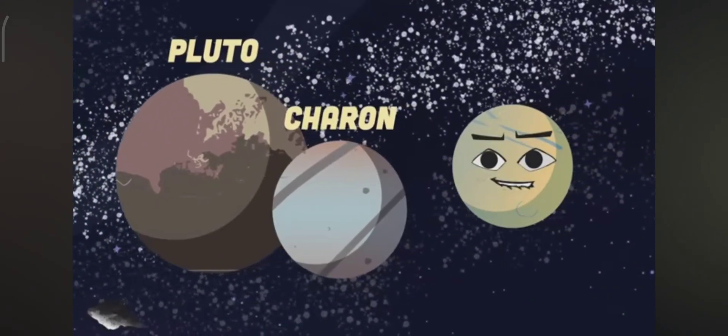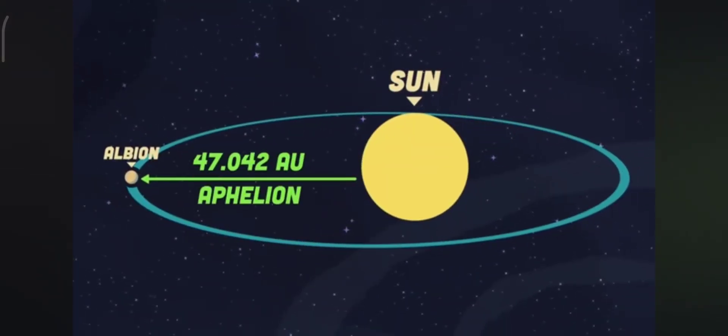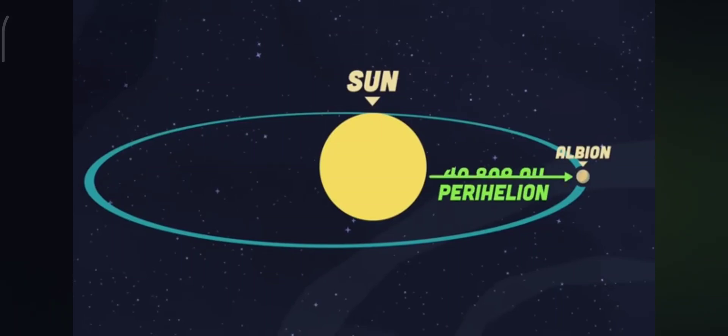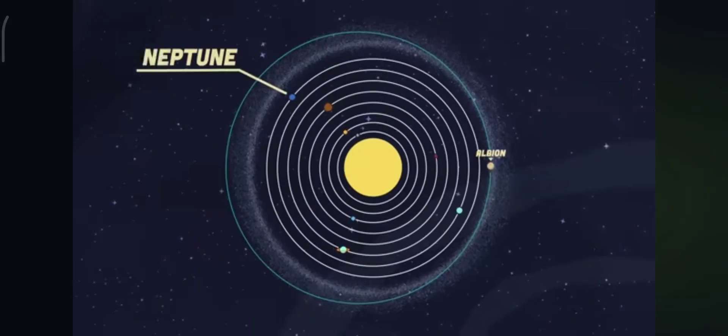My aphelion is 47.042 AU and my perihelion is 40.809 AU. You can find me orbiting the sun beyond Neptune.